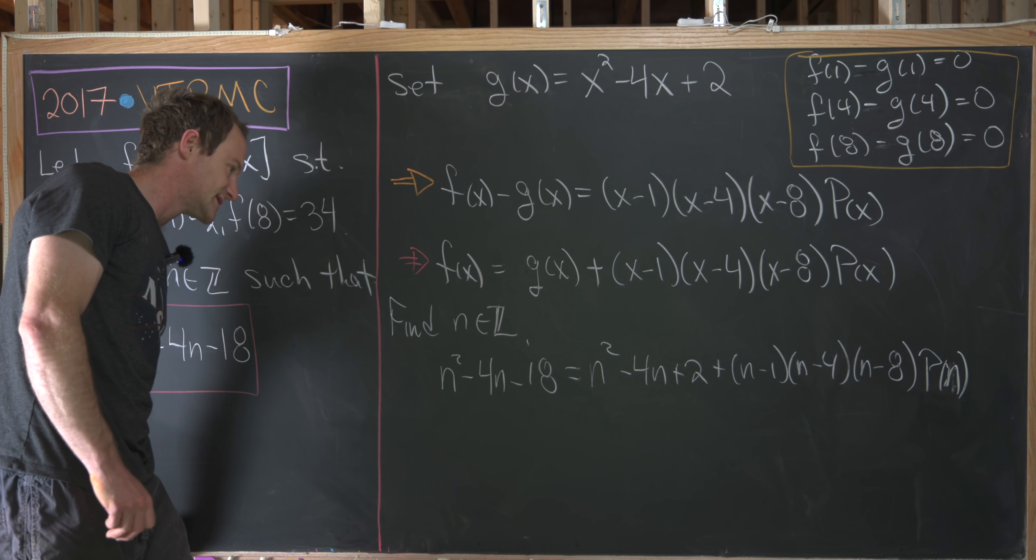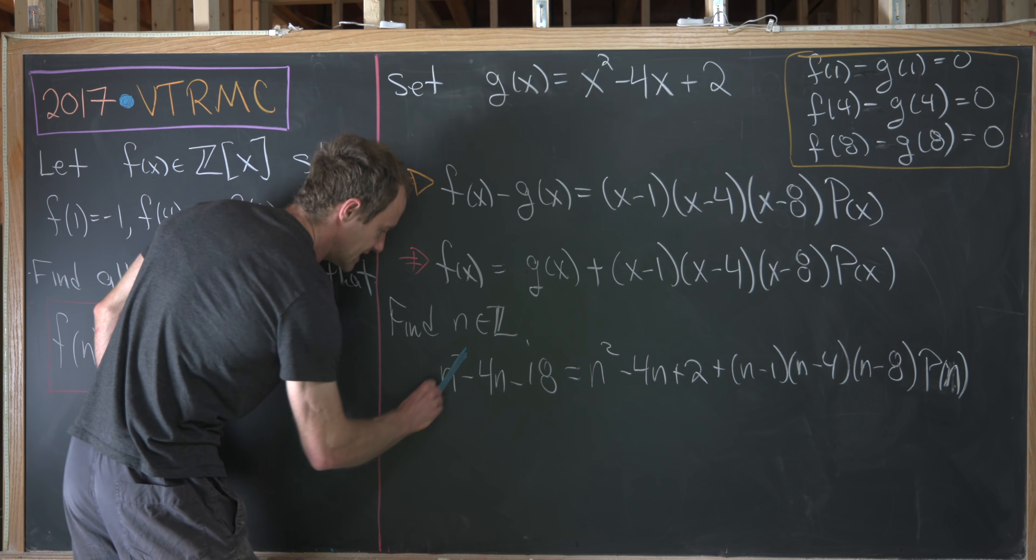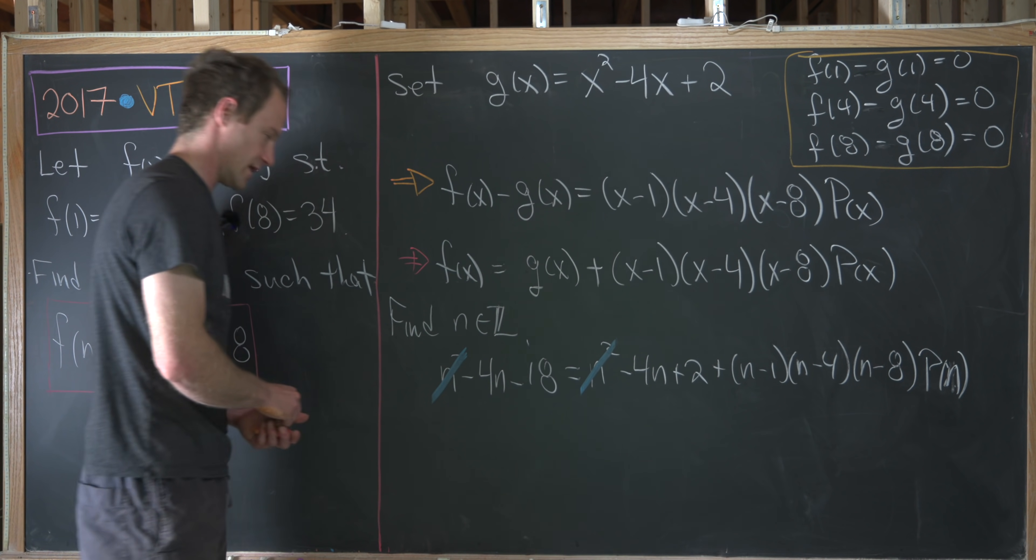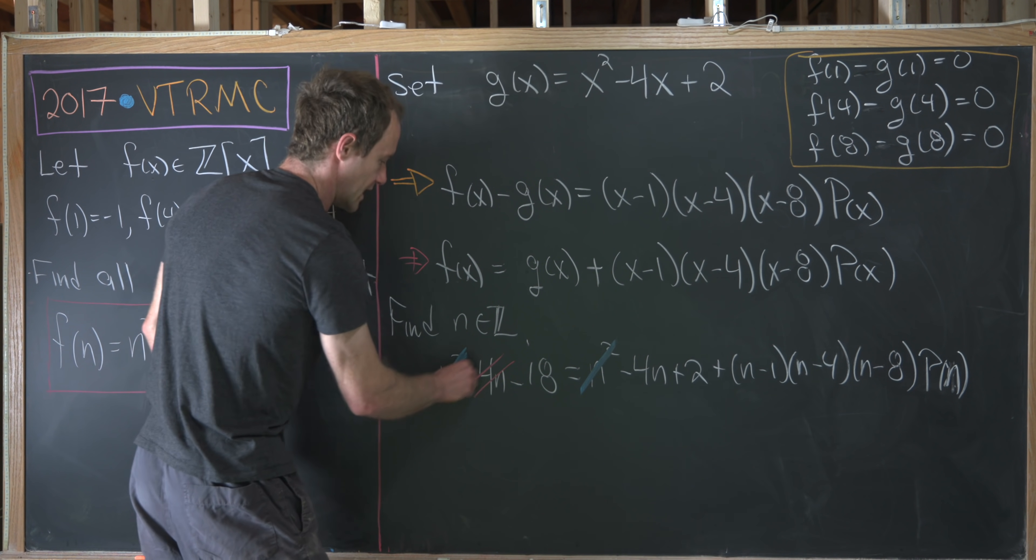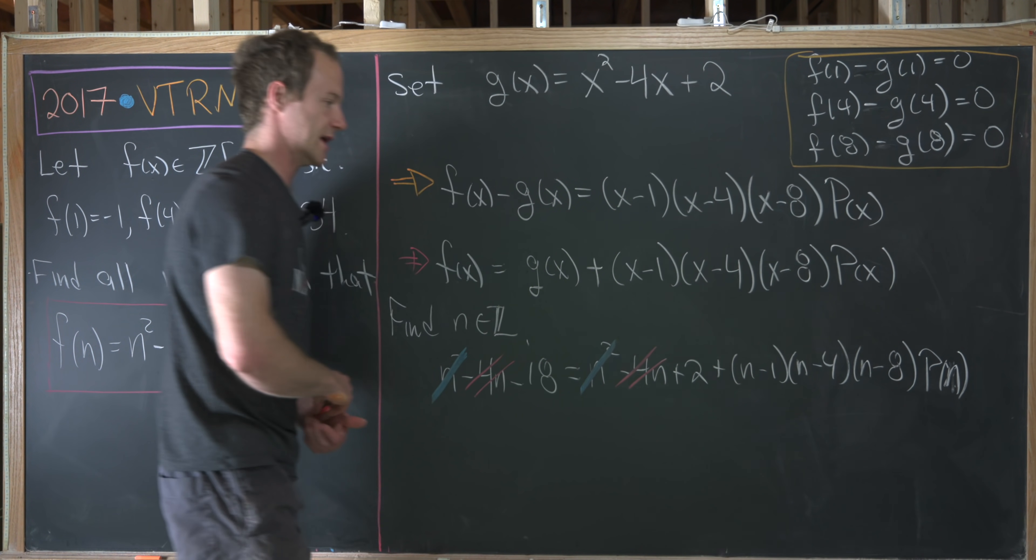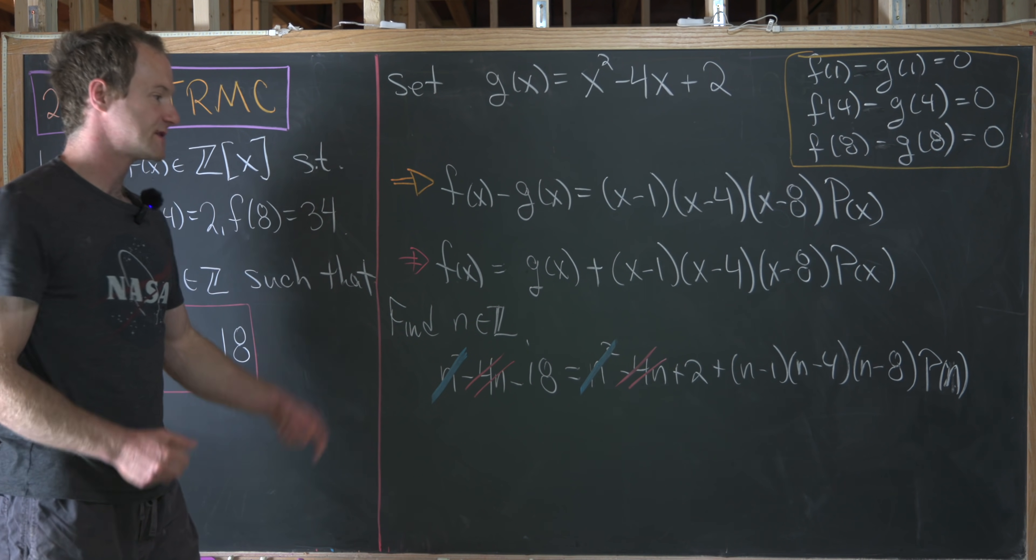But now we can see that a bunch of stuff cancels. Notice that this n squared will cancel this n squared, and then this 4n will cancel this 4n. From there, we can move some things around.